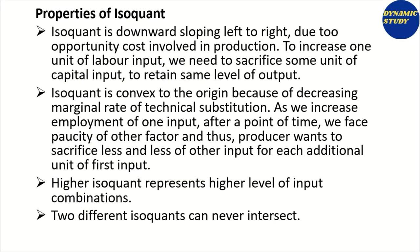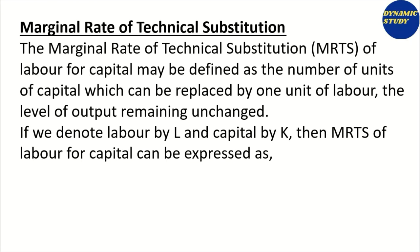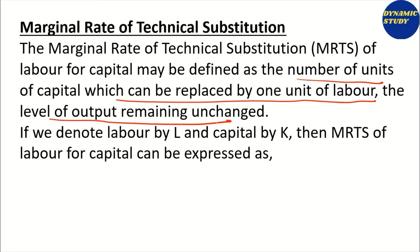Isoquant is similar to the indifference curve, which I explained under utility theory. The difference is that here we take labor and capital, and output is fixed, whereas in the indifference curve utility is fixed. The marginal rate of technical substitution of labor for capital may be defined as the number of units of capital which can be replaced by one unit of labor, with the level of output unchanged.